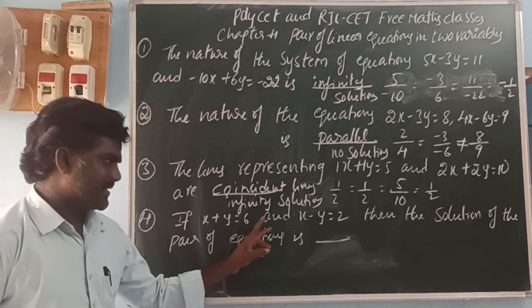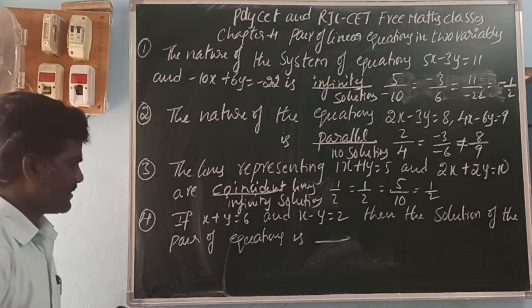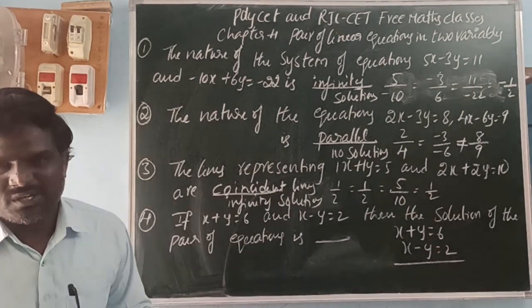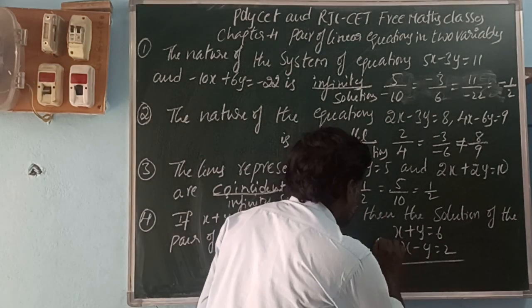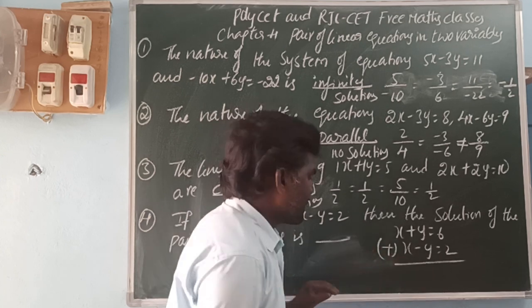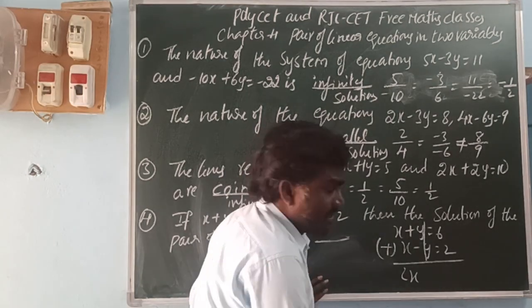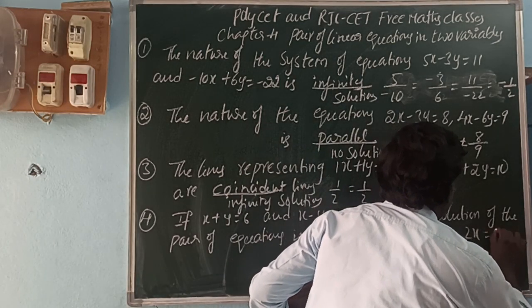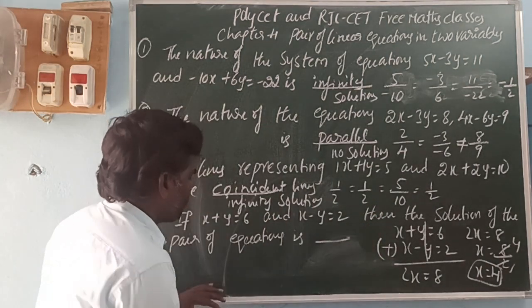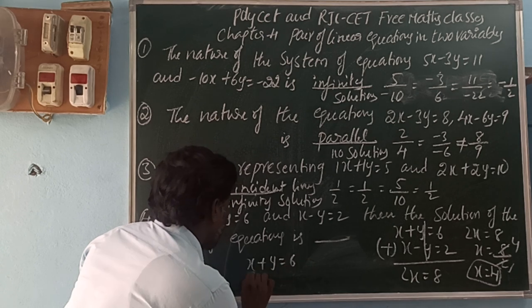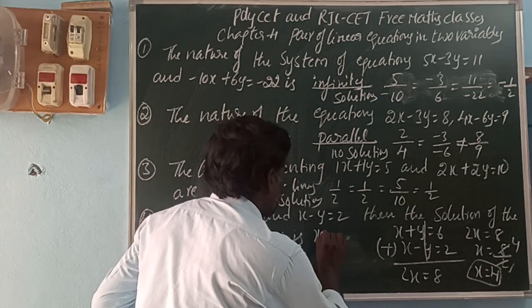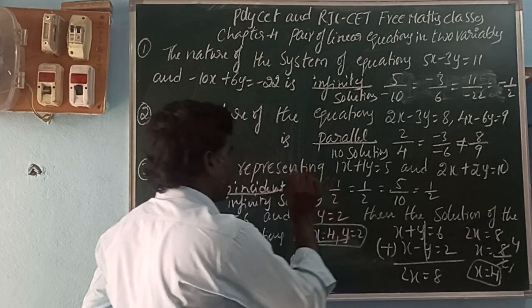Next, if x plus y is equal to 6 and x minus y is equal to 2, then find the solution. We can solve by using the elimination method. Adding the two equations: the y terms, plus y and minus y, cancel. So x plus x gives 2x, and 6 plus 2 gives 8. Therefore 2x equals 8, so x equals 4. Substituting x equals 4 into x plus y equals 6: 4 plus y equals 6, so y equals 6 minus 4 equals 2. The solutions are x equals 4 and y equals 2.